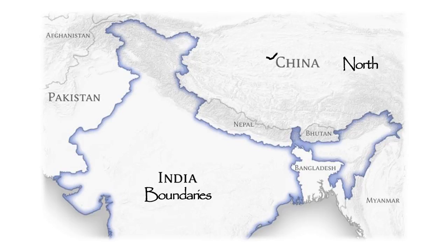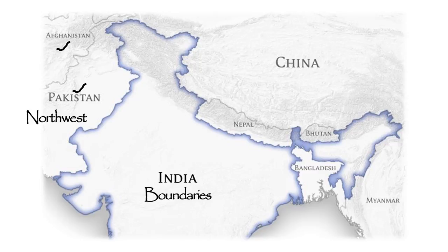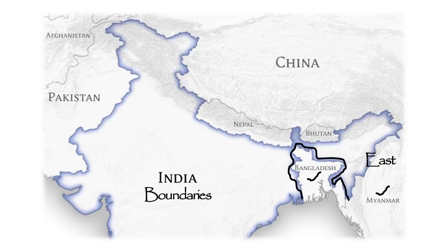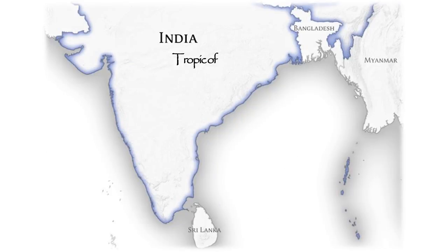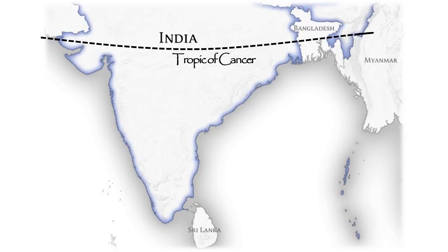Coming to the boundaries of India, in the north, India is surrounded by China, Nepal, and Bhutan. On the northwest side we have Pakistan and Afghanistan. To the east we have Myanmar, and we also have Bangladesh, which forms an enclave — India totally surrounds Bangladesh.